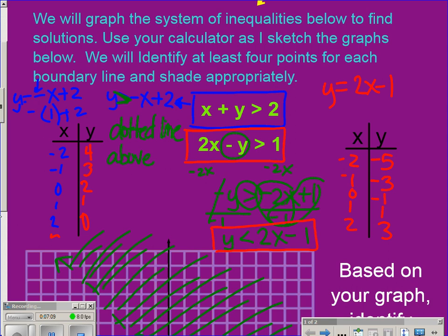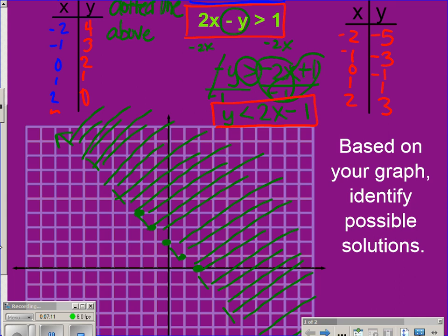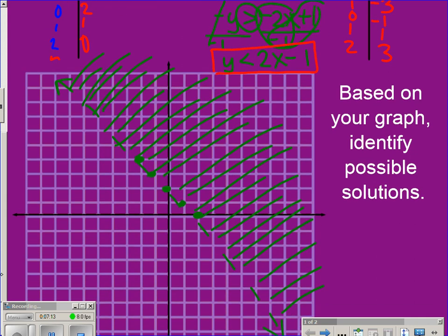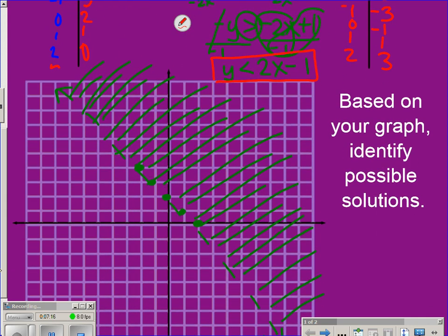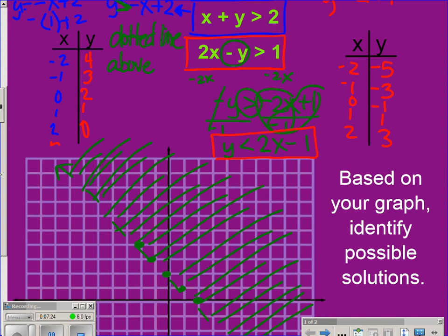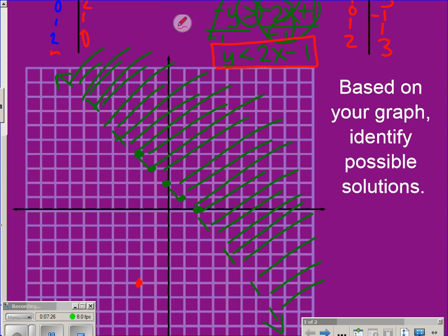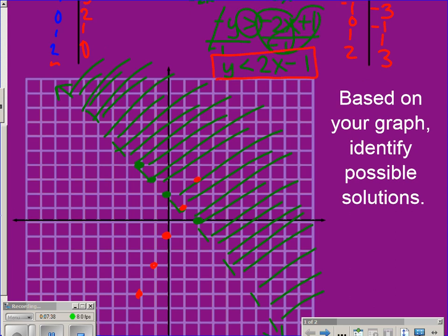All right, so here are the values that are on the boundary line for our second inequality. So I'm going to plot those points. So you can now hit graph on your calculator. Let me plot these points. Negative 2, negative 5, left and down. Okay, what was the next one? It was negative 1, negative 3, so left and down. 0, negative 1. 1, 1, I believe, and 2, 3. So right and up.